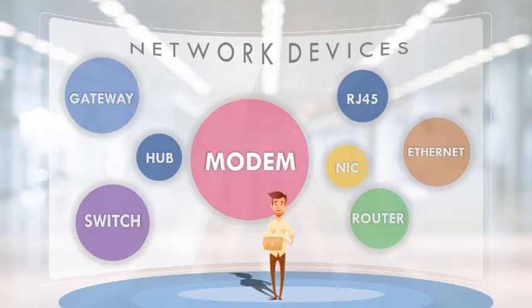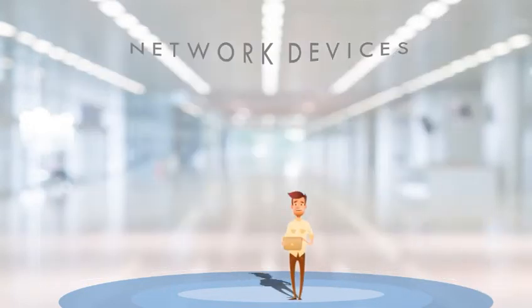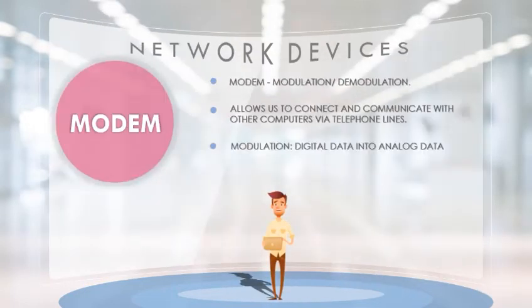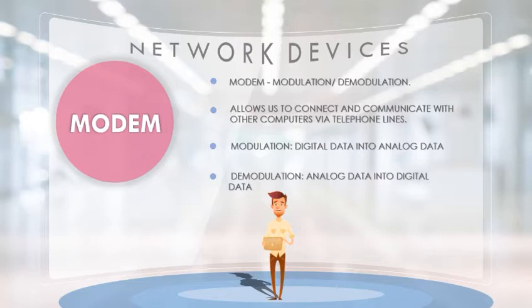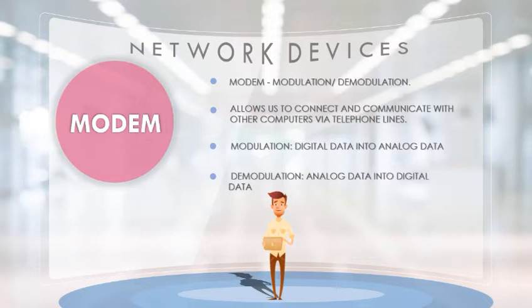We are going to see each one in detail. The first one is a modem. A modem is a device that allows us to connect and communicate with other computers via telephone lines. A modem performs two operations: modulation and demodulation. Modulation means the modem changes the digital data from your computer into analog data — a format that can be carried over telephone lines or other networking cables.